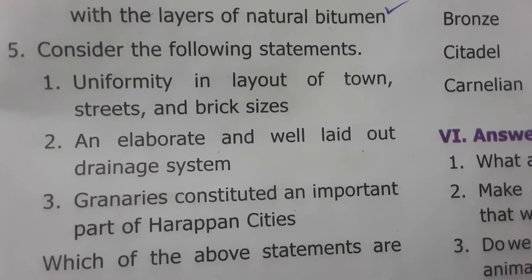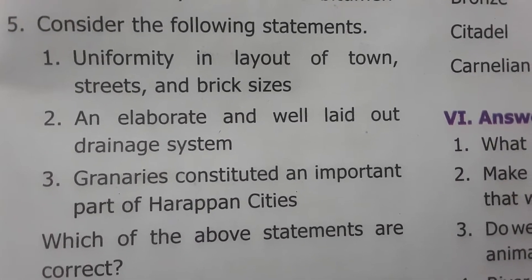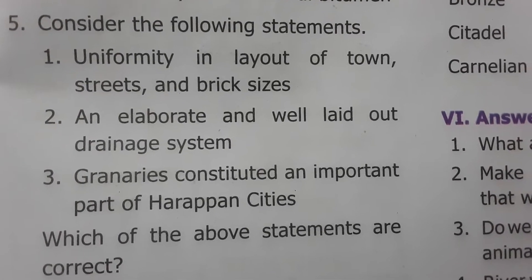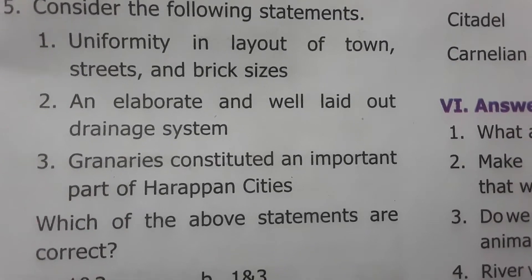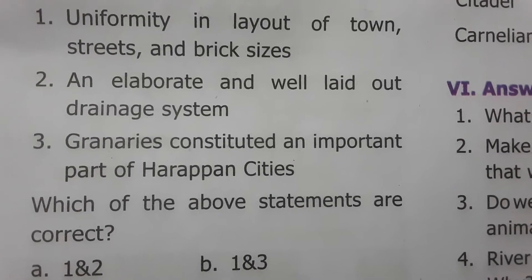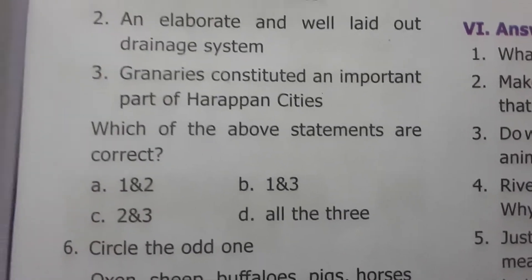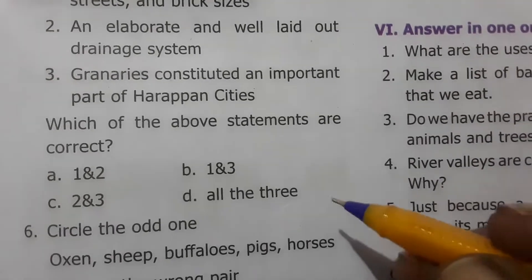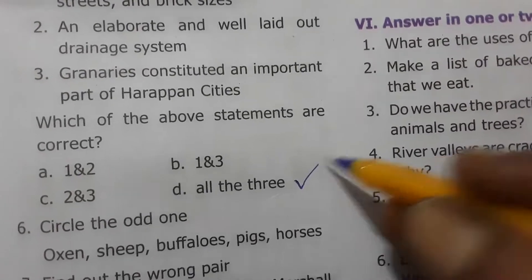Consider the following statements: uniformity in layout of town streets and brick sizes; an elaborate and well-laid-out drainage system; granaries constituted an important part of Harappan cities. Which of the above statements are correct? All statements are correct, so option D is the correct answer.